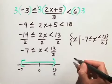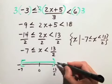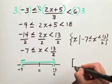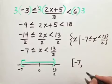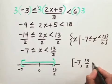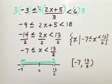In the interval notation, we can look right at the graph and draw the interval, starting at negative 7, including negative 7, all the way up to but not including 13 halves.